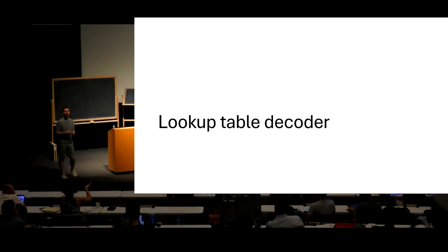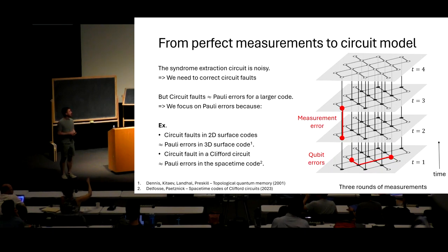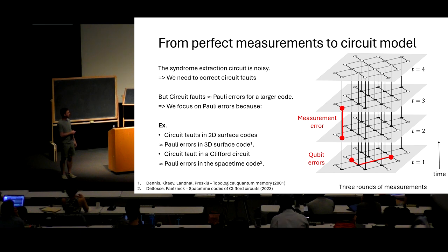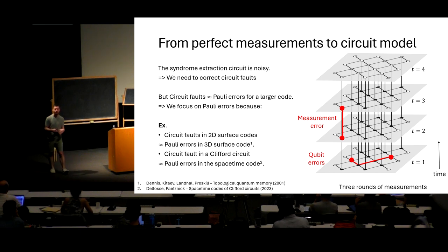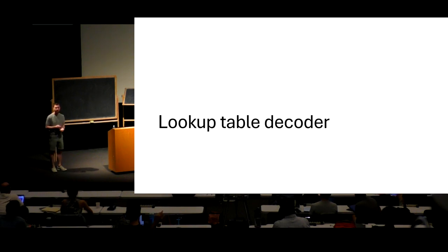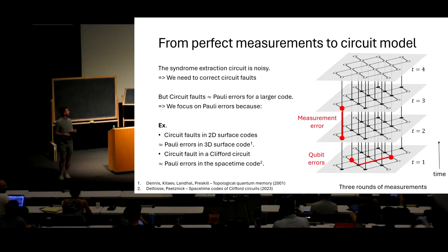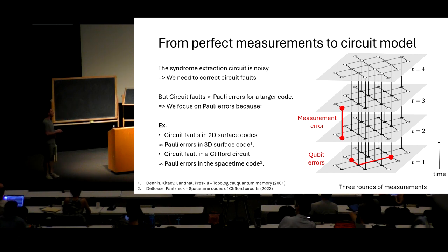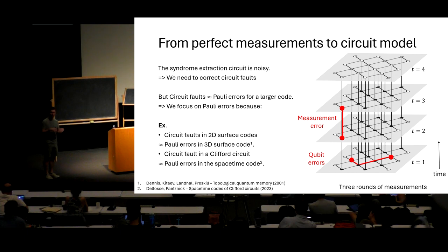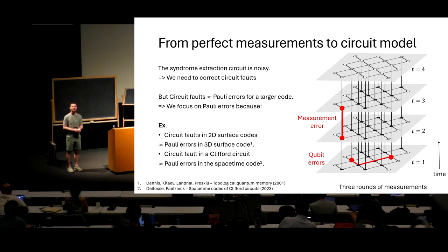A student asked: in the 3D surface code, the stabilizers will be supported on two consecutive layers — they look exactly like the stabilizers of the 3D toric code we saw as an example. Another question: the code defined this way is a function of the gates in the circuit, taking into account the exact structure of the circuit. I won't cover this in lectures, but I'm happy to discuss it during the week.